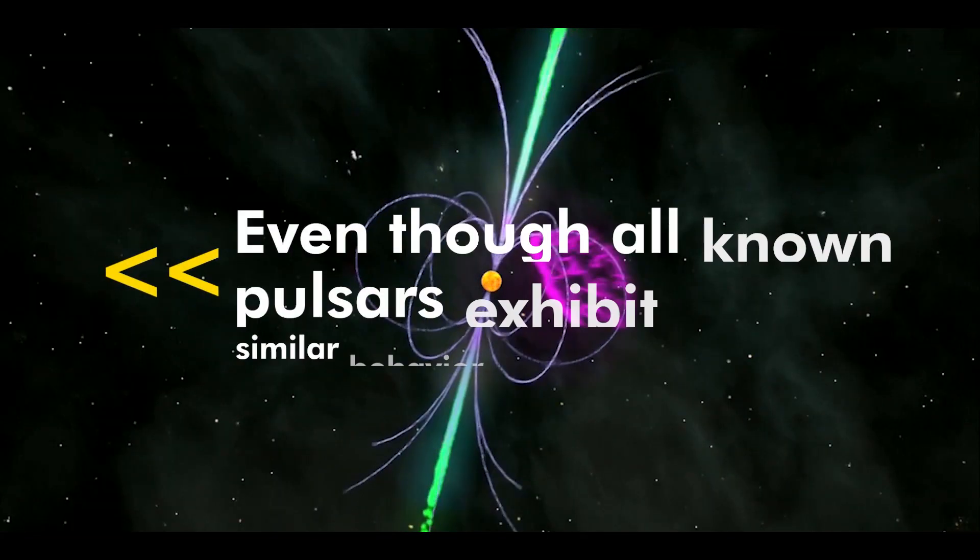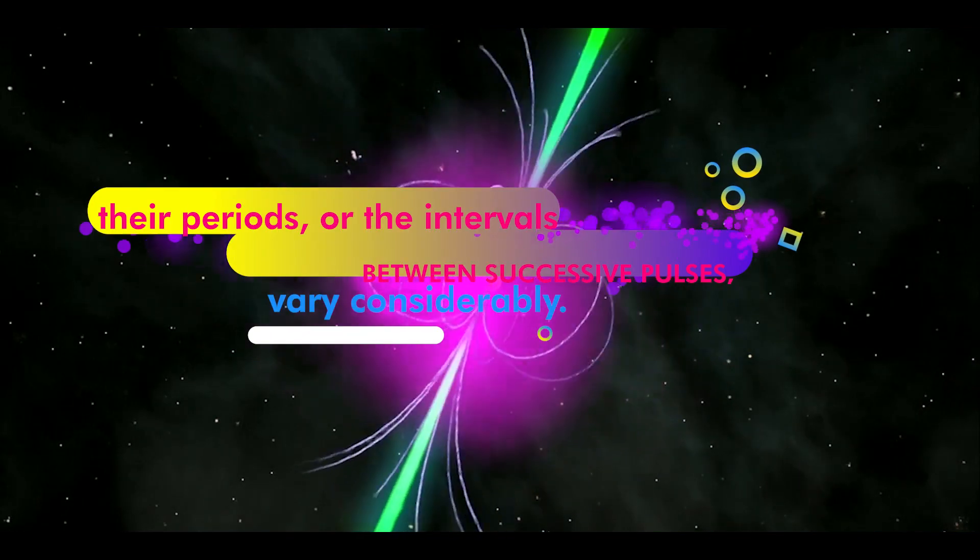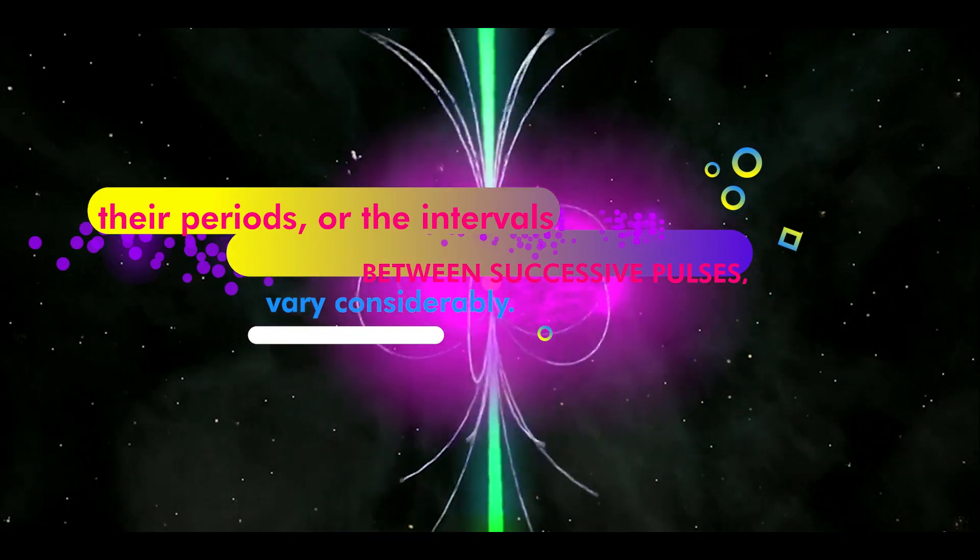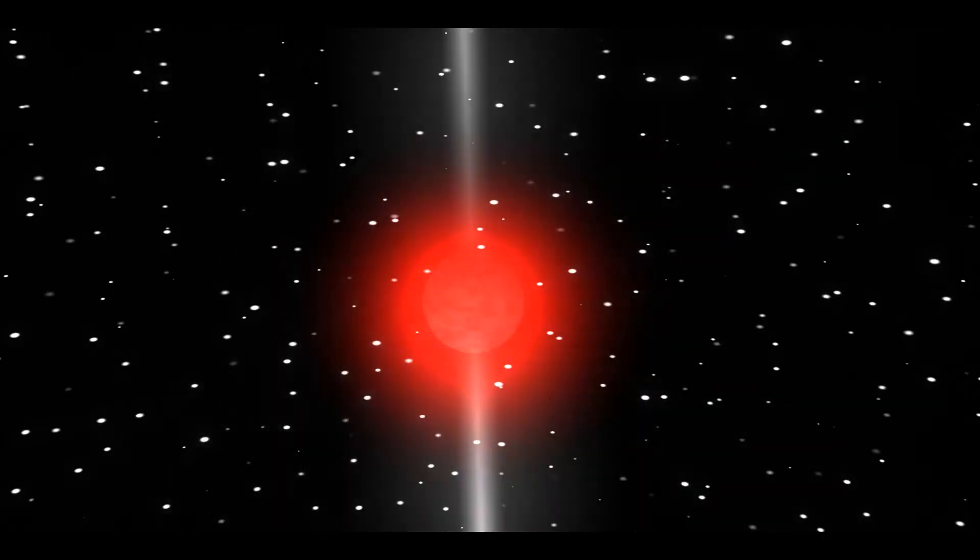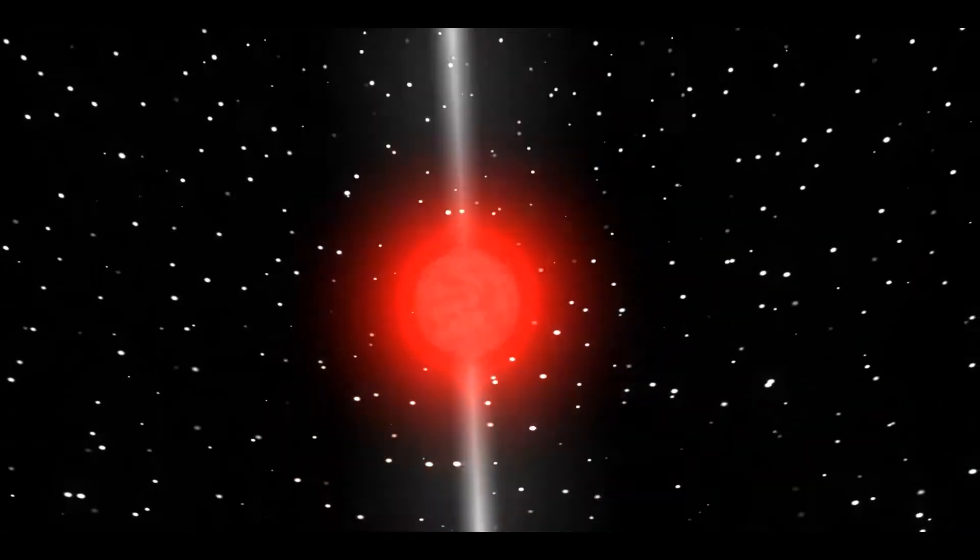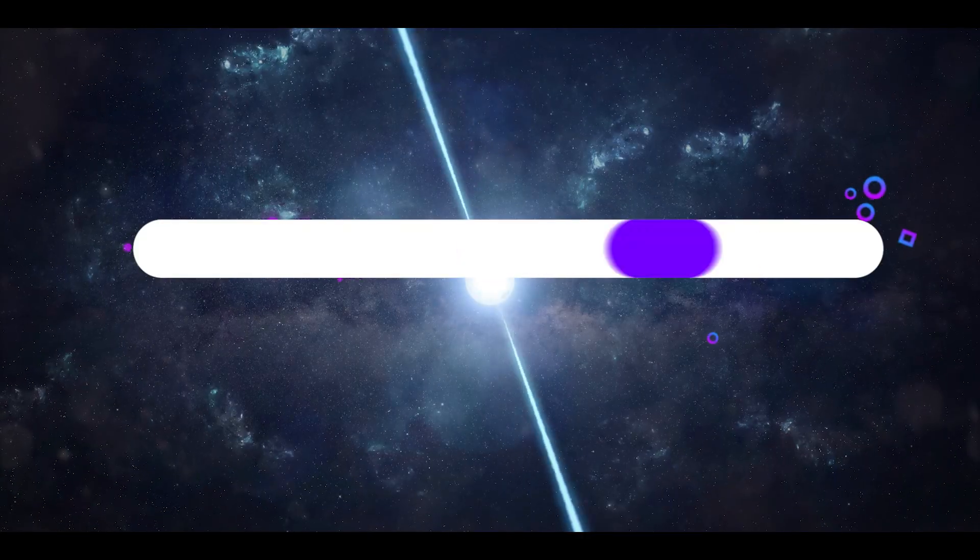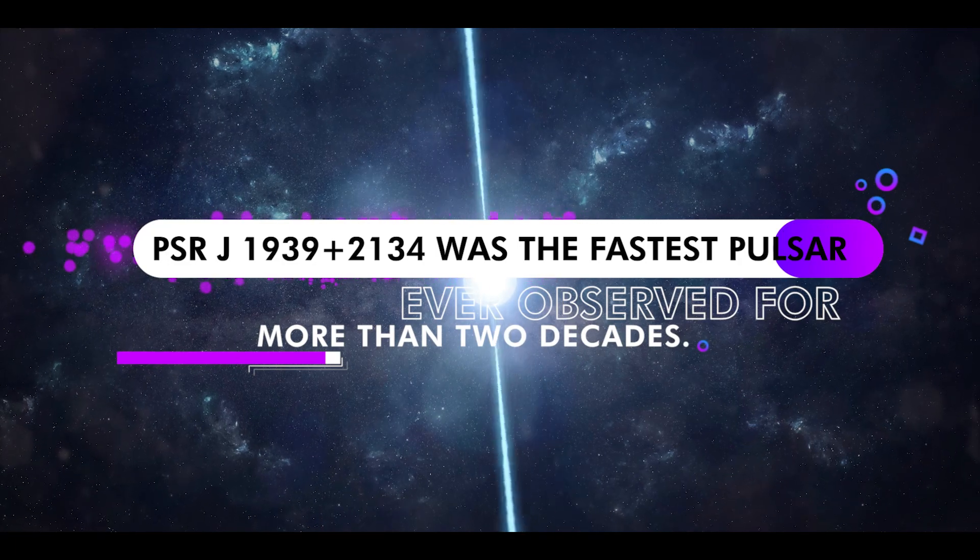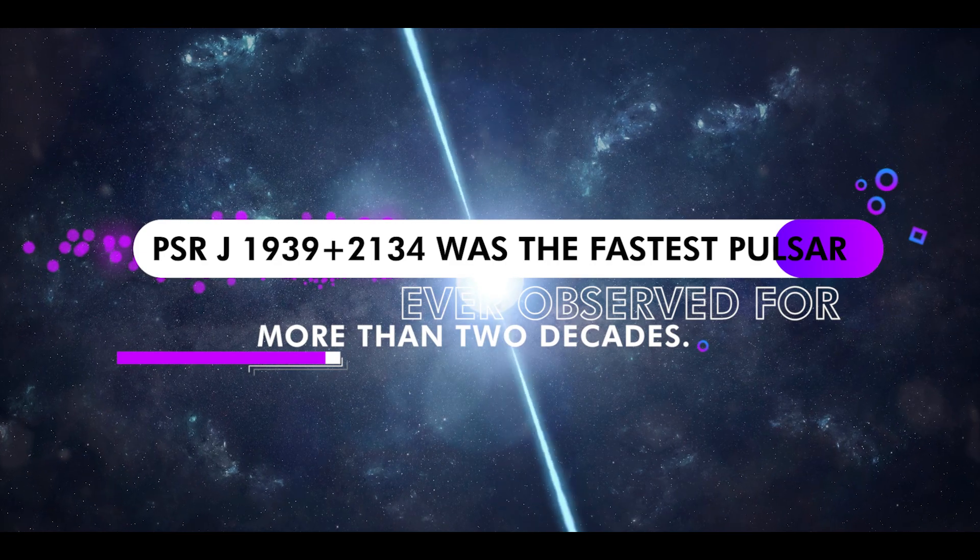Even though all known pulsars exhibit similar behavior, their periods, or the intervals between successive pulses, vary considerably. So far, the slowest pulsar observed has a period of about 11.8 seconds. Teaser J-1939-2134 was the fastest pulsar ever observed for more than two decades.